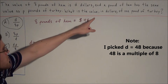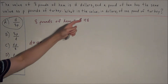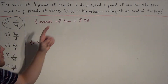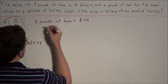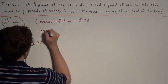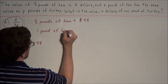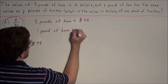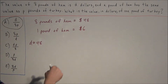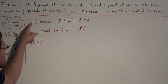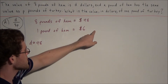A pound of ham has the same price as p pounds of turkey. If 8 pounds of ham is 48 dollars, then 1 pound of ham equals 6 dollars, because 8 divided by 8 is 1 and 48 divided by 8 is 6.